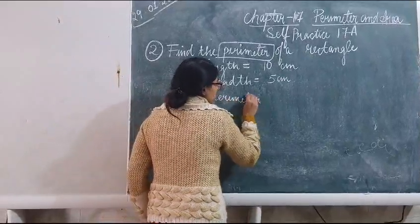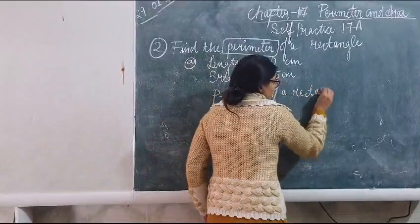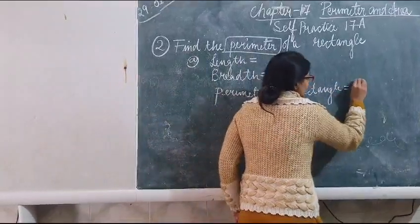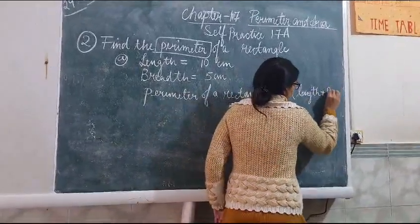Perimeter of a rectangle formula is 2 into length plus breadth.